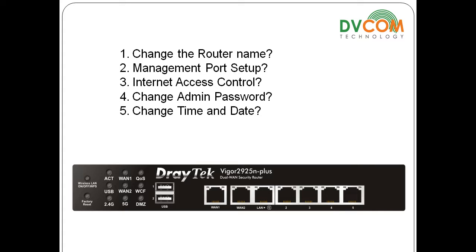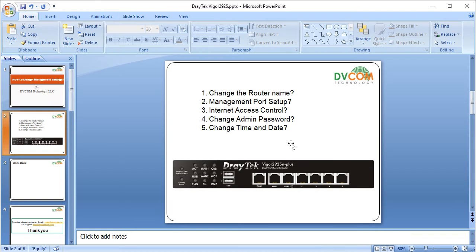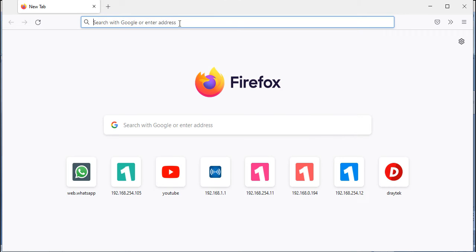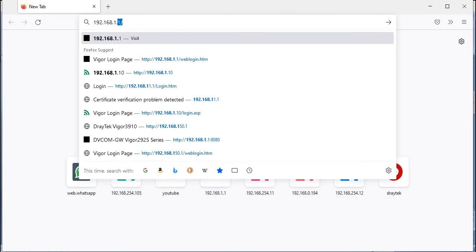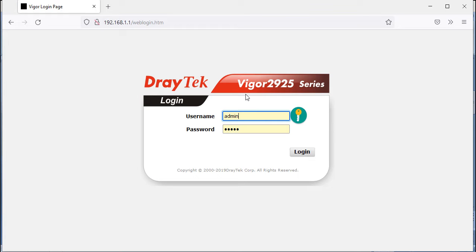I'm going to use the Vigor2925N as the example router in this lab and show all these topics step by step. First, let's access the Vigor2925N. The default IP address is 192.168.1.1, the default username is admin, and the default password is admin. Open the browser and type 192.168.1.1.